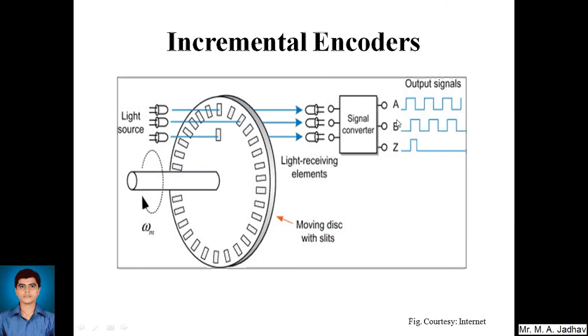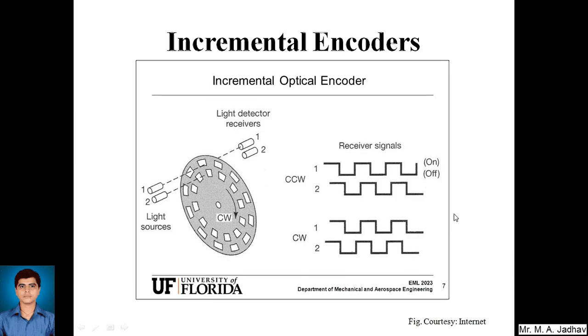We can say if A is going to give us pulse prior to B, then it is rotating in the clockwise direction because the light will pass through A first and then B. So we will get the idea regarding the direction of rotations. If B gives us pulse earlier than A, we can say it is in anticlockwise direction. It can be better understood with the next figure.